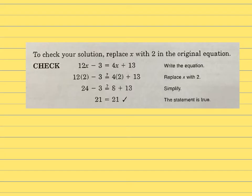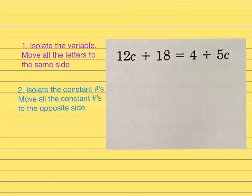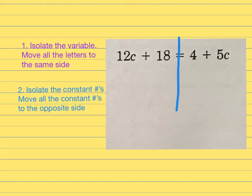Now we're going to try some on our own. The first step is to isolate the variable and put all the letters on one side. Then we'll isolate the constant numbers and move them to the opposite side. I like to draw a line down the center to separate the left and right, and I prefer to put my letters on the left side — but it's your choice.